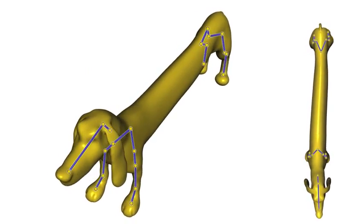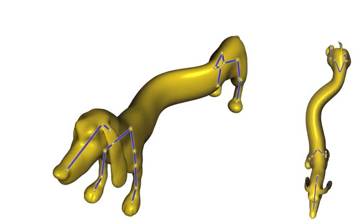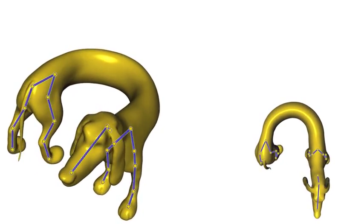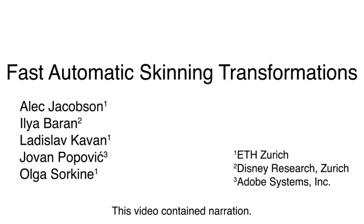Here, a disconnected skeleton deforms a wiener dog. Extra weights along the belly allow our optimization the freedom to create an elastic-looking deformation. Thank you for watching.